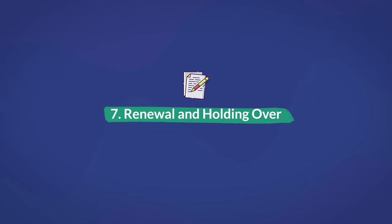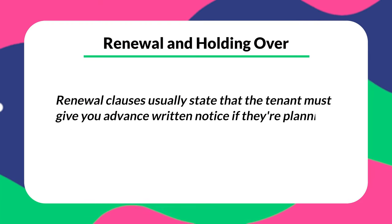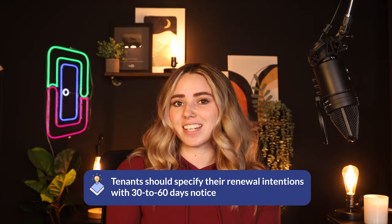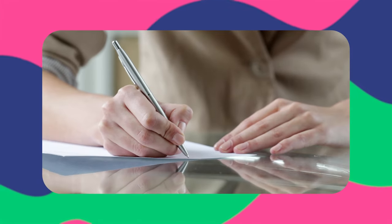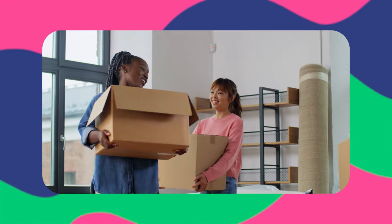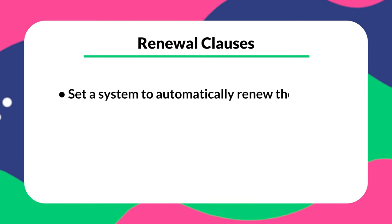Number seven is renewal and holding over. Renewal clauses usually state that the tenant must give you advance written notice if they're planning to renew the lease or move out. Tenants should specify their renewal intentions with 30 to 60 days' notice, giving you enough time to find a new tenant if they plan on moving out. If the tenant doesn't provide advance notice, they'll be held liable for those extra days of rent. These clauses also help you collect rent legally if the tenant doesn't move out past the end of the lease. For renewals, you can set a system to automatically renew the lease or draft a new lease document.